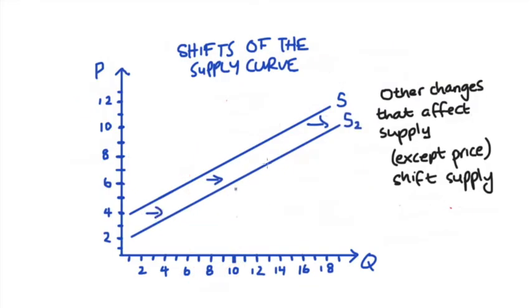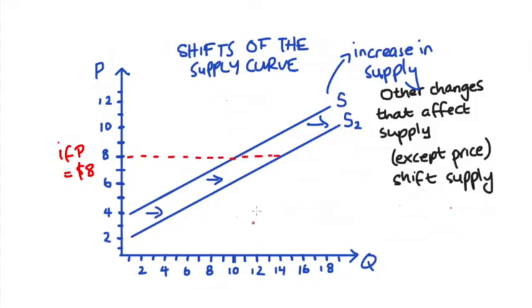To model an increase in the supply we shift the supply curve to the right like this to S2. In a similar way to the decrease in supply we can understand this shift as for every price now we are supplying more either from the firm or in a market if we're talking about a market supply curve. So just checking price of eight dollars again, at S we used to supply 10 but after the increase in supply now we supply 14 units.